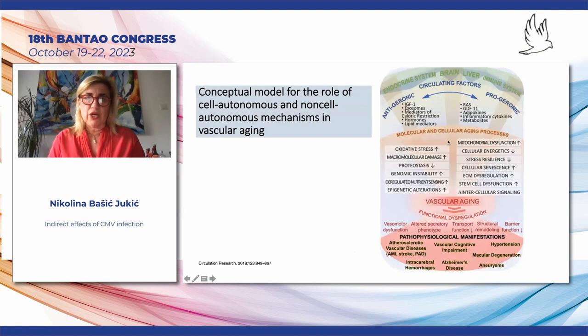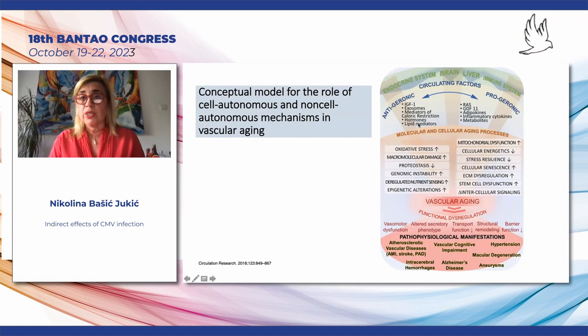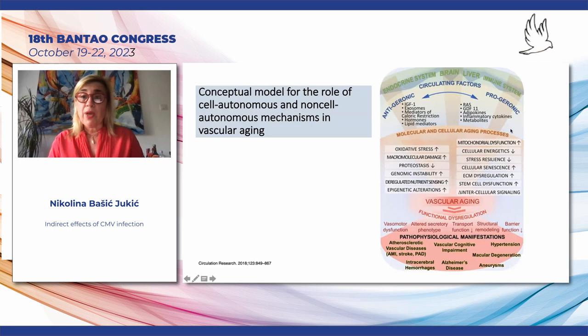Based on this introduction, we can present the conceptual model for the role of autonomous mechanisms in vascular aging. First, we have circulating factors that may be anti-geronic or pro-geronic. Anti-geronic factors are IGF-1, exosomes, mediators of caloric restriction, thermals, and lipid mediators. Pro-geronic factors include the reticulatory system, GDF-11, adipokines, inflammatory cytokines, and different metabolites.